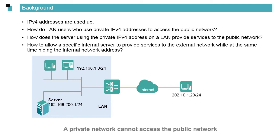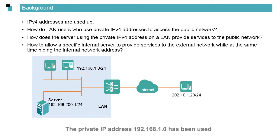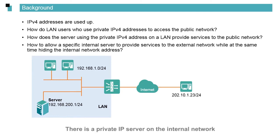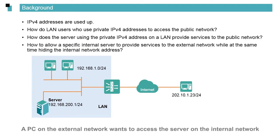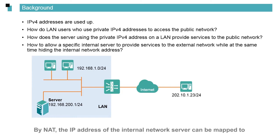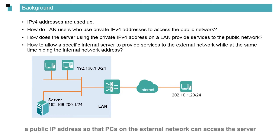A private network cannot access the public network because it is unrecognizable and therefore unreachable on the public network. The private IP address 192.168.1.0 has been used from multiple internal networks around the globe. By NAT, this private IP address can be converted to a valid public IP address. There is a private IP server on the internal network, and a PC on the external network wants to access it. By NAT, the IP address of the internal network server can be mapped to a public IP address so that PCs on the external network can access the server.